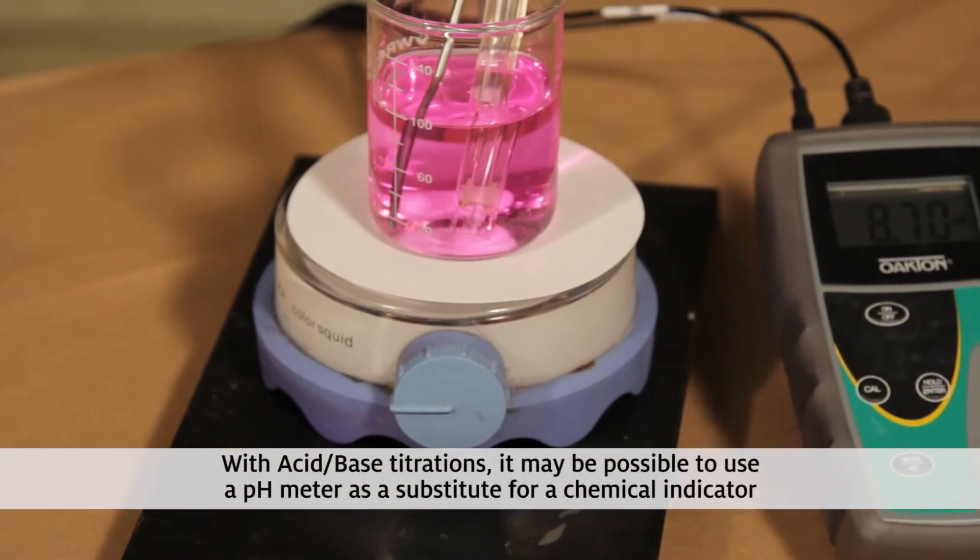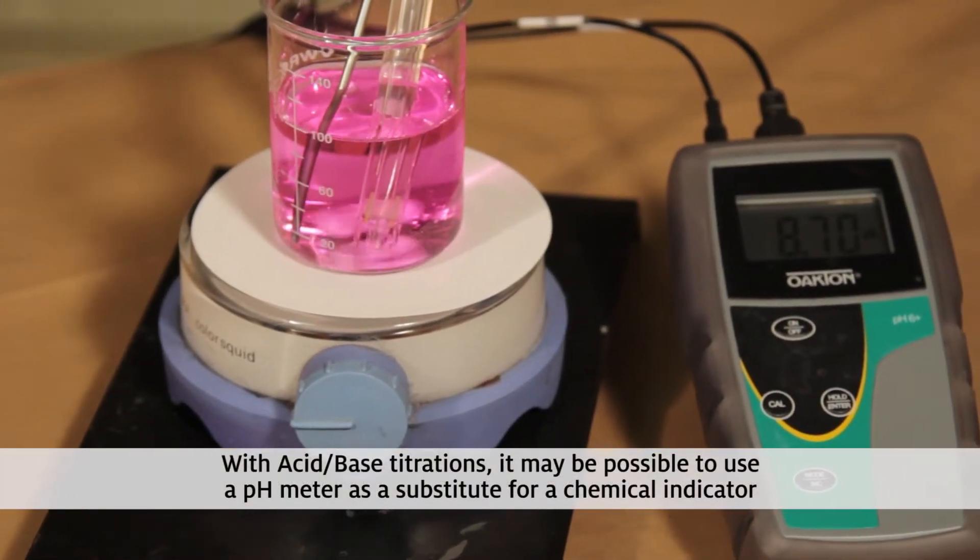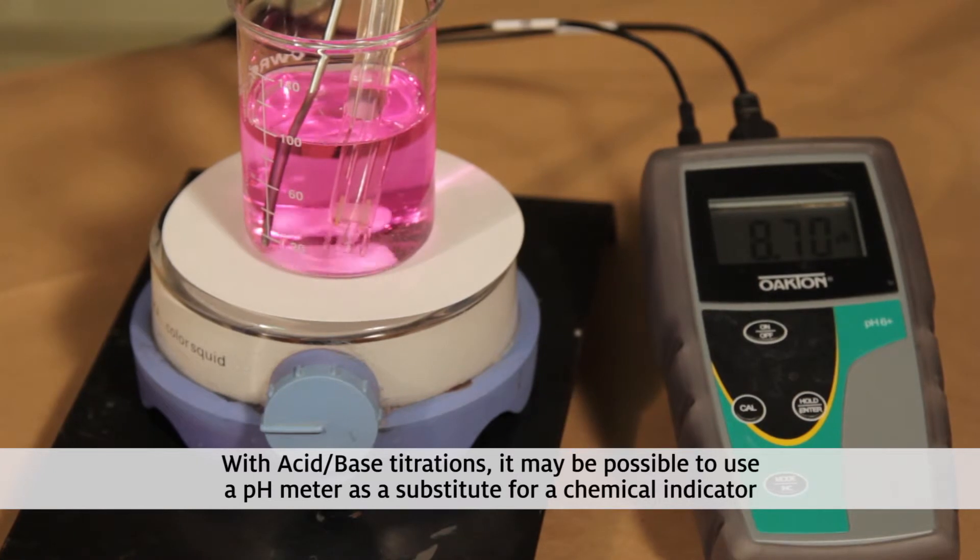In some cases, such as acid-base titrations, it may be possible to use a pH meter as a substitute for a chemical indicator.